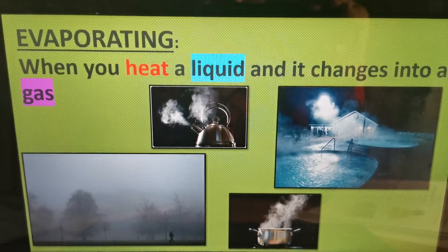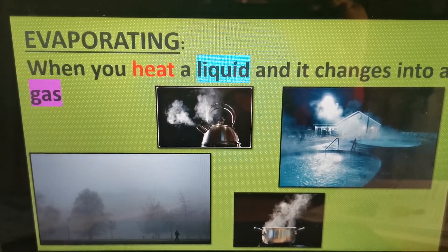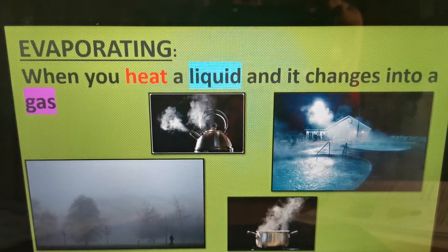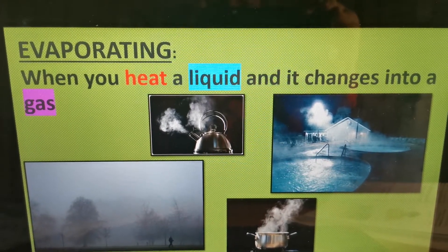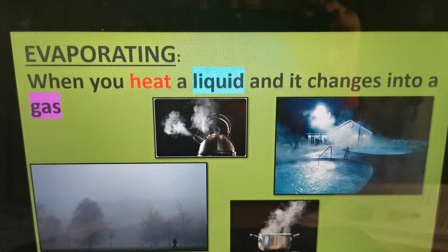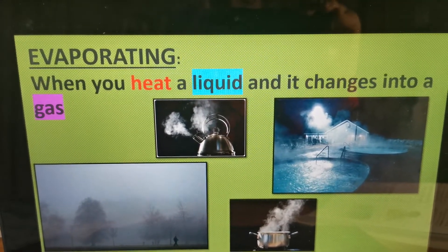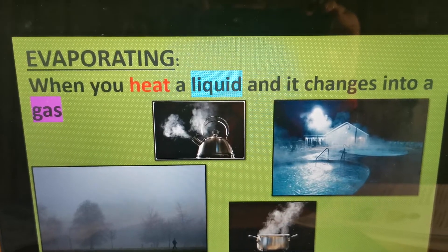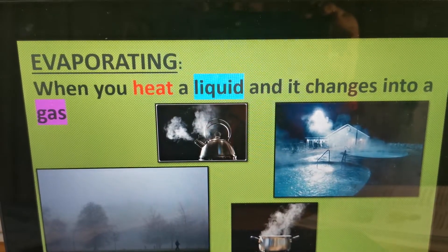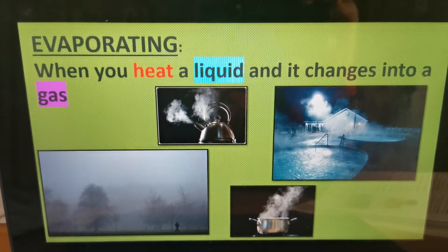For example, when you boil water in a kettle, what comes out of the kettle? Steam. That steam is water vapor — that is the water that changed into a gas. The water gained heat and it changed into a gas. The steam is also known as water vapor.